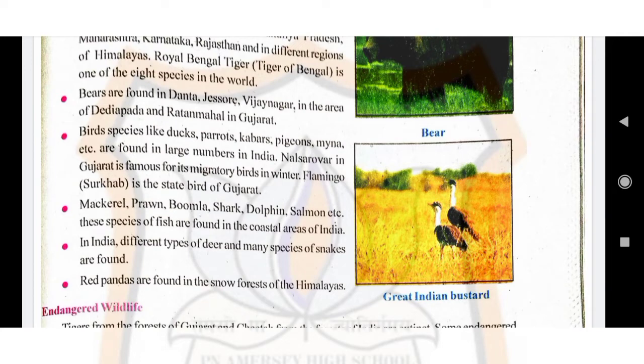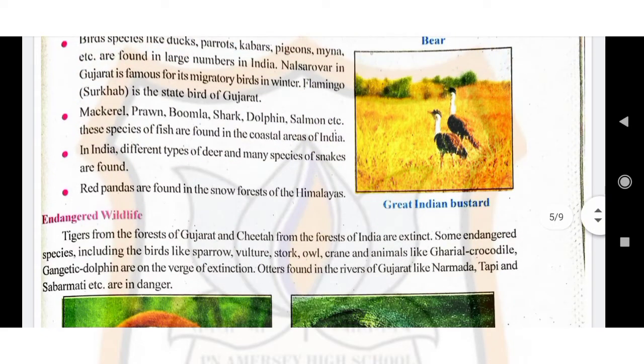Species of fish such as mackerel, jinga, bumla, shark, dolphin, salmon, pomfret, earring, whale, dugongs, octopus, etc. are found in India. Different species of deer and snakes are also found in India. Red panda is found in the cold forests of the Himalayas.